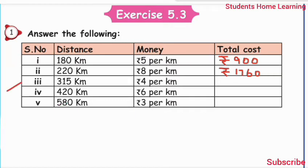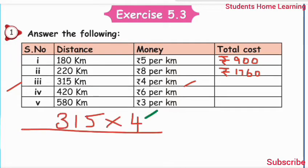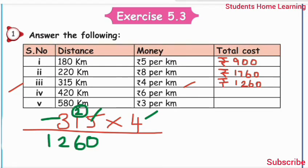Third sum: 315 km, rupees 4 per km. 315 multiply by 4: 4 times 5 is 20, write 0, carry 2. 4 times 1 is 4, plus 2 is 6. 4 times 3 is 12. Answer: 1260 rupees.